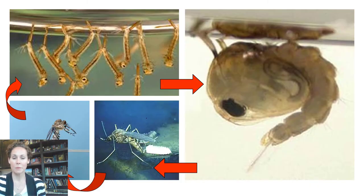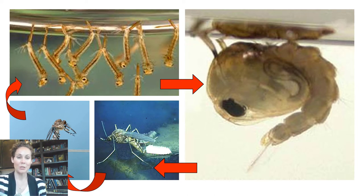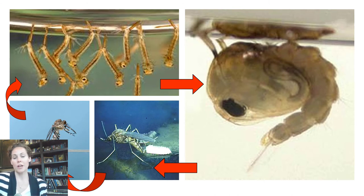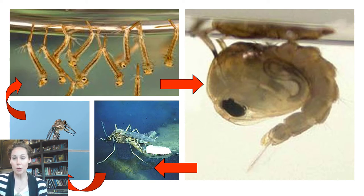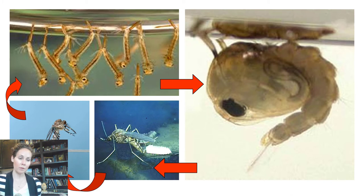Some holometabolous insects can be aquatic, such as the mosquito. A mosquito lays its eggs on the water surface. Those eggs hatch into what are called wigglers — the larvae that live in the water and feed on organic matter in dirty water. They will turn into that round, fetus-looking thing which is their pupa stage. Mosquito pupae don't feed, like all pupae, but these are unique because they move around. Then they emerge from the pupa stage out of the water as adults to start the process all over again.